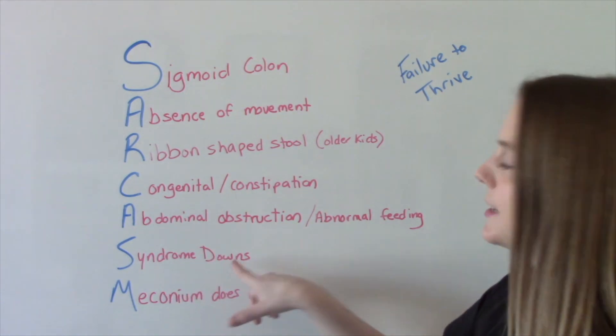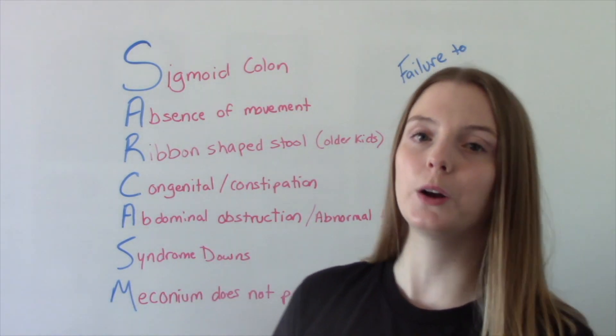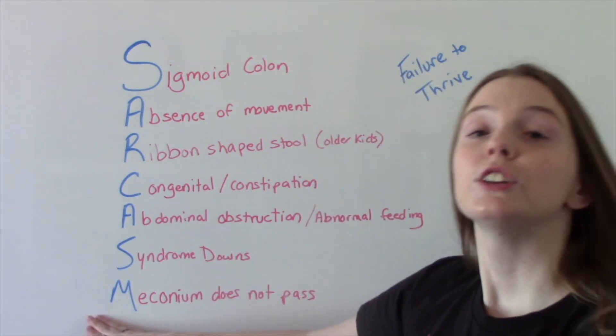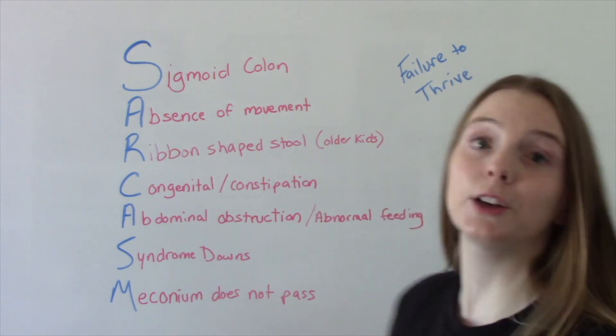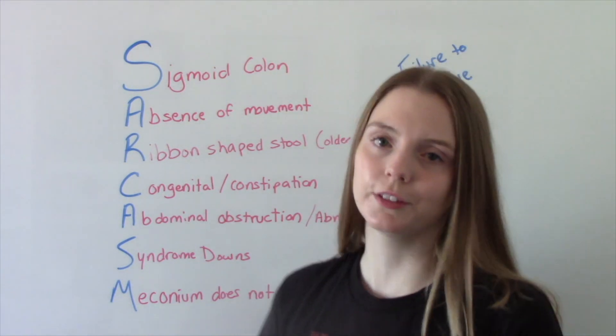S is for syndrome, Down syndrome, so trisomy 21 we said was a risk factor. So a symptom of aganglionic megacolon is they don't have that bowel movement within the first 24 hours.